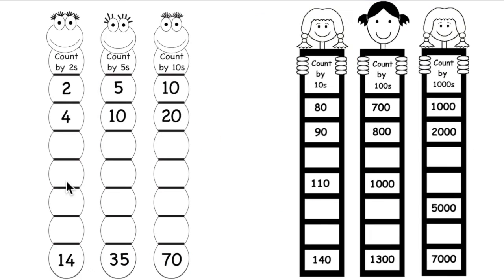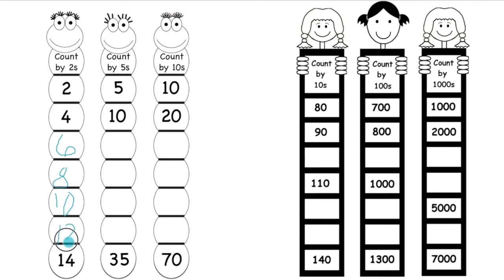Here we are working with sequences. In the first option there is a sequence counting by 2s: 2 plus 2 equals 4, 4 plus 2 equals 6, 6 plus 2 equals 8, 8 plus 2 equals 10, and 10 plus 2 equals 12. In the second sequence we count by 5s: 10 plus 5 is 15, and 25 plus 5 equals 30.